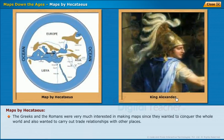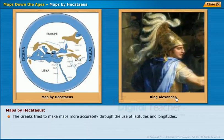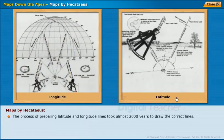The Greeks and the Romans were very much interested in making maps since they wanted to conquer the whole world and also wanted to carry out trade relationships with other places. For example, Alexander, who was a Greek king, wanted to conquer the whole world and came to India about 2,300 years ago — these maps were very useful to him. The Greeks tried to make maps more accurately through the use of latitudes and longitudes. The process of preparing latitude and longitude lines took almost 2,000 years to draw the correct lines.